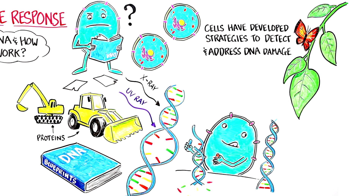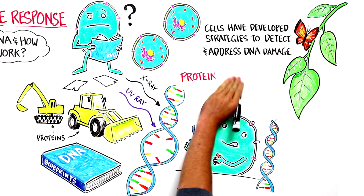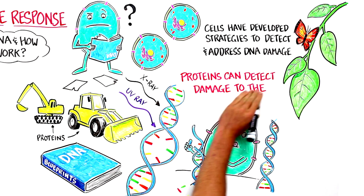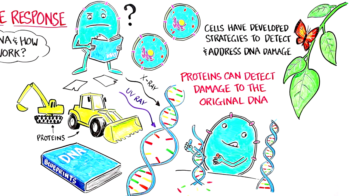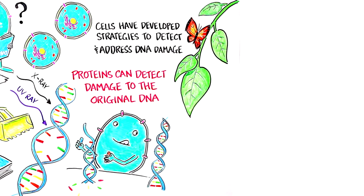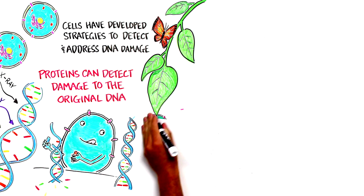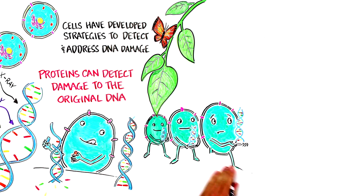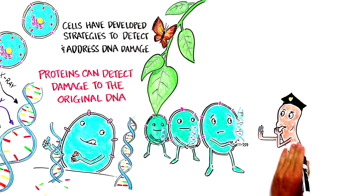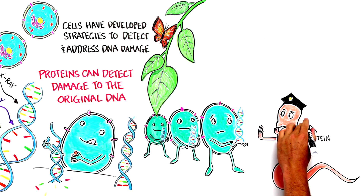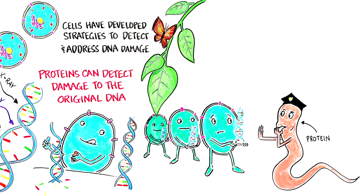The DNA damage response begins when a cell is copying its DNA to prepare for replication. During that process, proteins can detect damage to the original DNA. If they find any, they can trigger a variety of processes. First, they typically halt the cell division process. It's kind of like a construction inspection — if the DNA doesn't pass the quality test, the inspector forces the cell to deal with the problem before it is allowed to replicate.